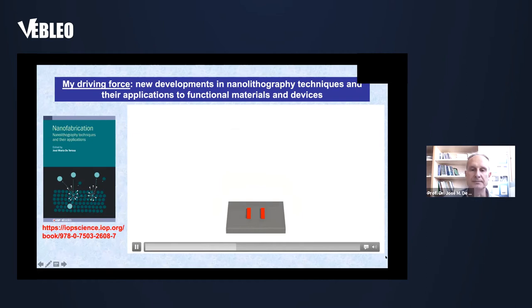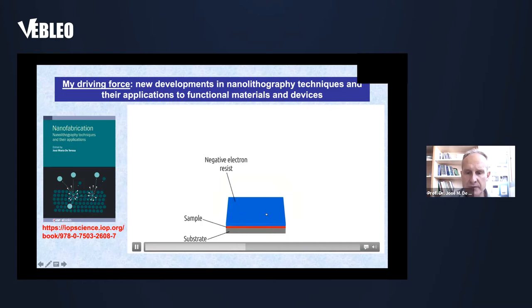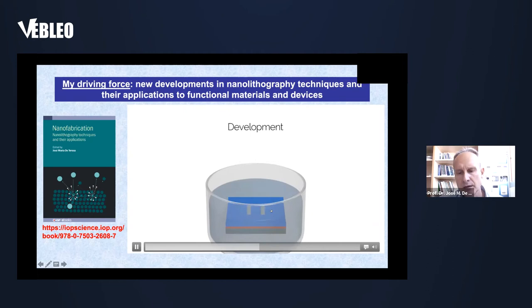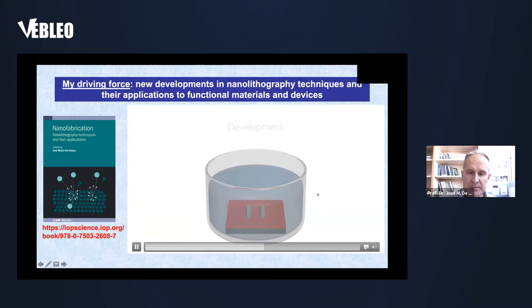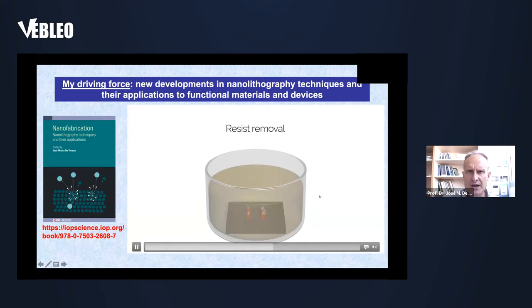In electron beam lithography, we don't use photons to change the resist sensitivity. Instead we use a scanning electron microscope with an electron source and lenses. You don't pattern the material all at once — you go little by little, scanning the electron beam on the resist. Then you develop the resist and do an etching process to transfer the pattern. With this approach you can get very high resolution.